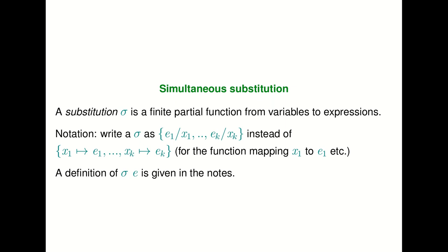To model these formal parameters we first had to introduce the idea of binding, and once you have a bound variable — one of the formal parameters — you should be allowed to rename the formal parameters without changing the meaning of an expression. So we introduced the idea of alpha equivalence to model this. We said that a term with a binder in it is equivalent to a term with a renamed binder, and we gave the rules for renaming variables in a consistent way.